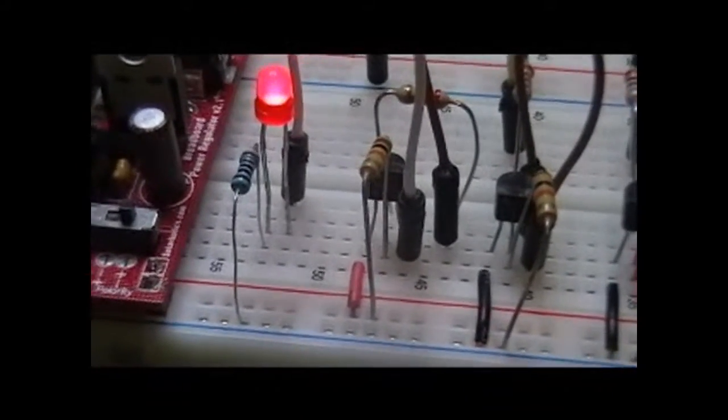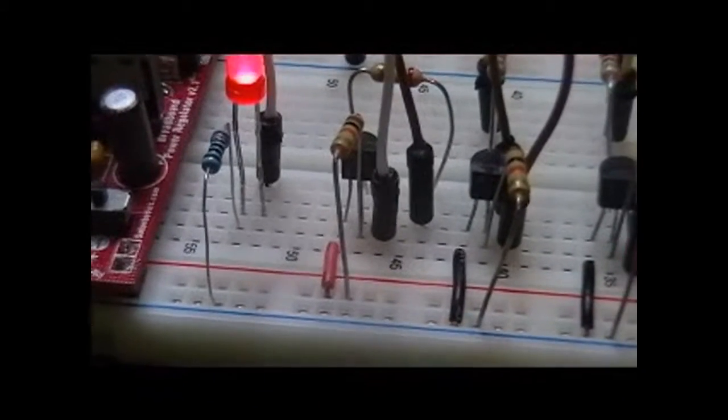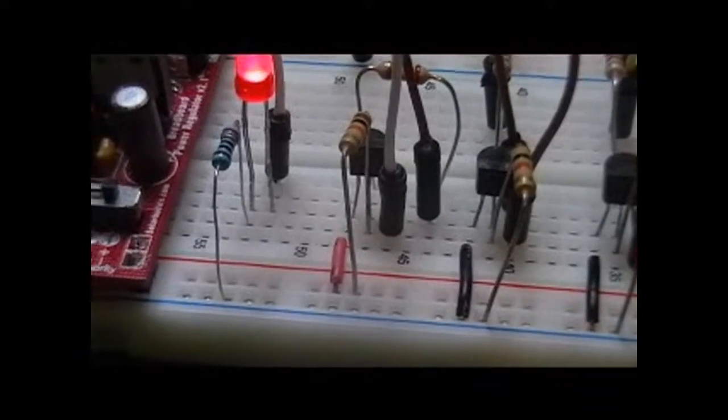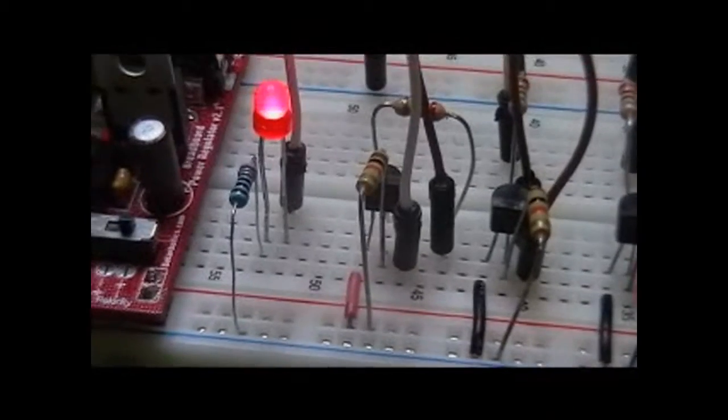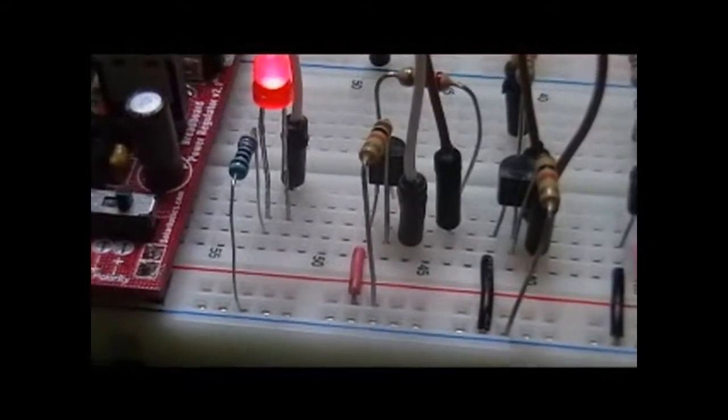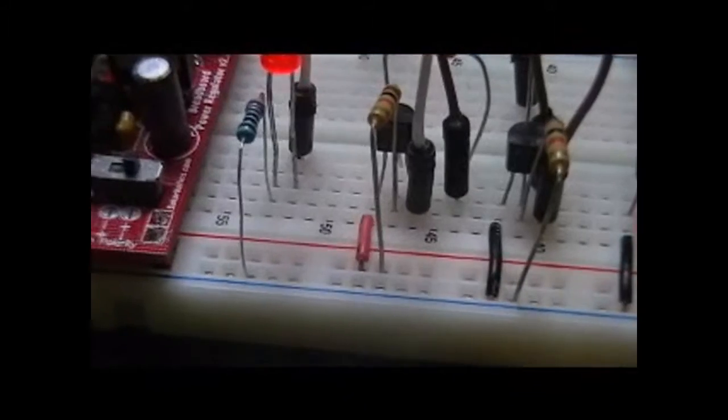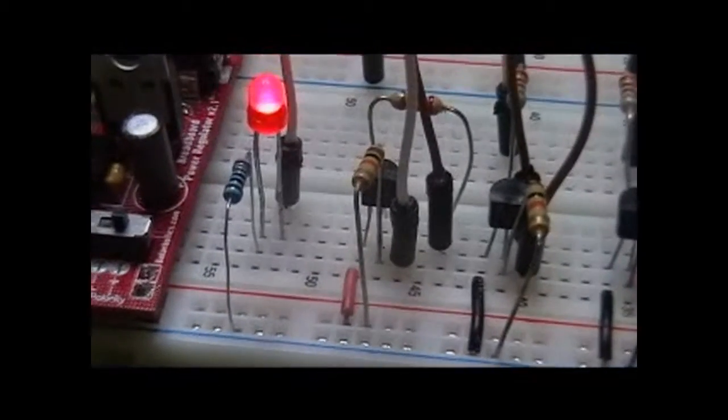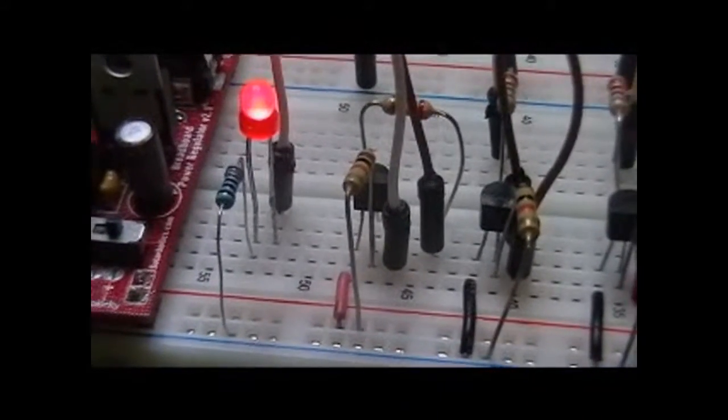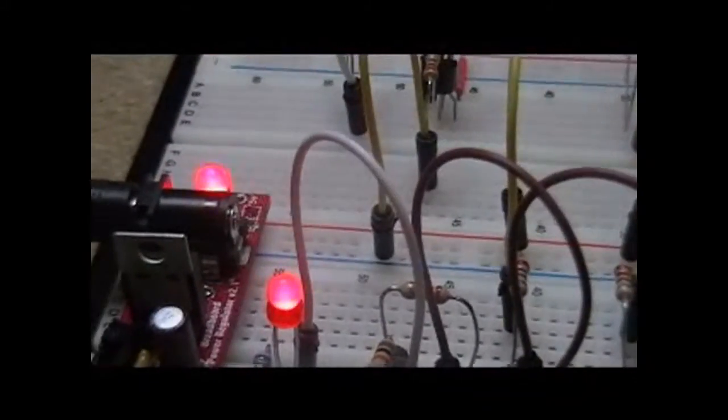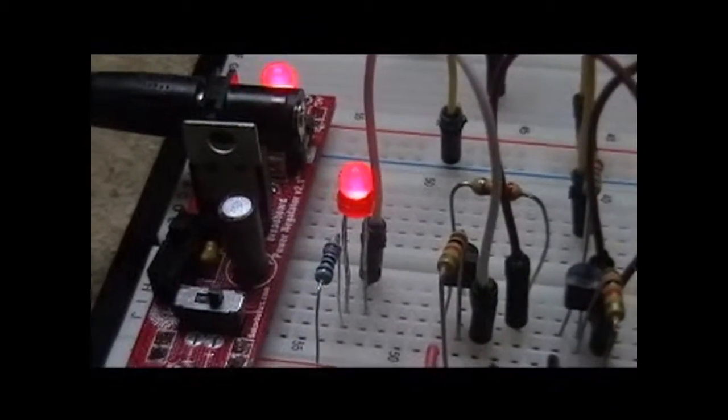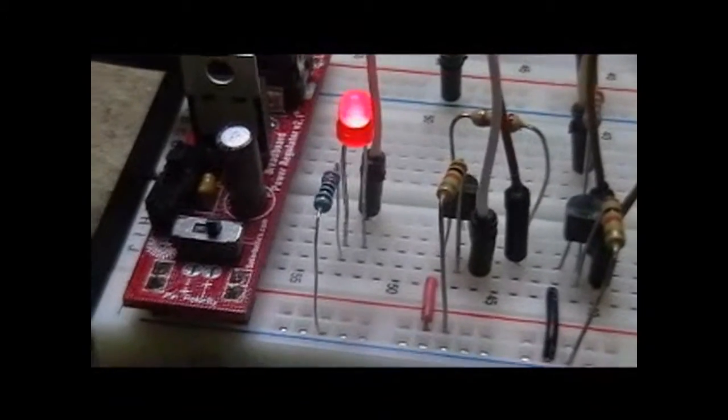You'll notice its emitter is connected to the positive rail, being a PNP transistor, that would be normal. The 10K ohm resistor, in this case, is connected between the base and the positive rail. And finally, there's a white wire here connected to the collector, which goes over and connects to the LED, which then is connected to ground.